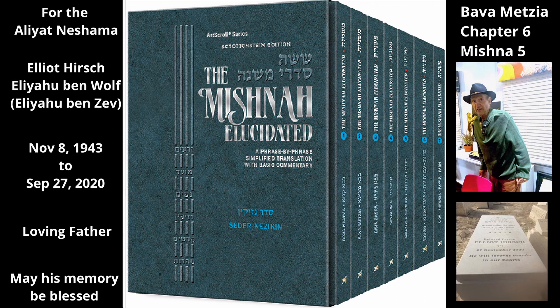The Mishnah now states the law when a renter loads the animal with the material he agreed to load it with but adds to the agreed-upon load. How much must he add to be liable if the animal is injured? Sumchus says in the name of Rebbe Meir: if he agreed to carry a lessech, he is liable if he adds a se'ah on a camel, or three kav on a donkey. If he adds less than this amount, he is not obligated to pay if the animal is injured.